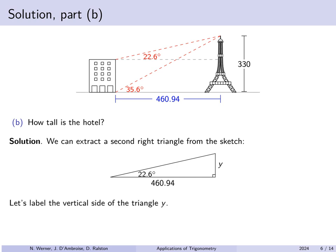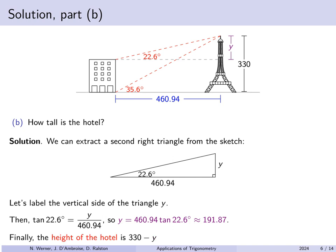Notice that y is not the height of the Eiffel Tower — y corresponds only to the upper portion. Using tangent again, which is often used in problems not involving the hypotenuse, we solve that y is approximately 191.87 meters. But we were asked to find the height of the hotel. From our diagram, the height of the hotel is the height of the Eiffel Tower, 330 meters, minus this height y — that gives 138.13 meters.